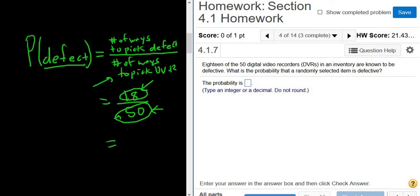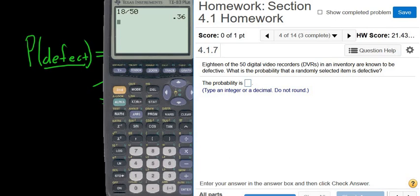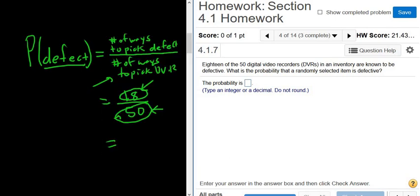So 18 over 50 can be reduced. Let me use my calculator. 18 over 50, enter. So 0.36 should be the answer, so the answer here is 0.36. I'll go ahead and write it down: 0.36.